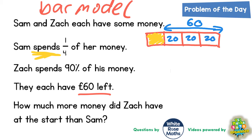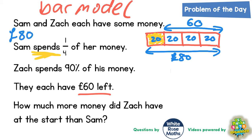Also, the piece that she spent must also be worth £20. That leaves us with the conclusion that she must have started with £80, because four lots of £20 is £80. So at the start, Sam had £80.